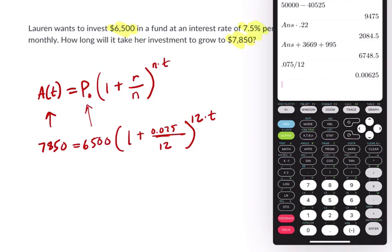How do we do that? I'm going to divide by 6,500 on both sides, so I get 7,850 divided by 6,500. Now we get this unfriendly number there, so I'm going to try to hold on to that using the store function. Press STO and then alpha A. That'll be my A variable.